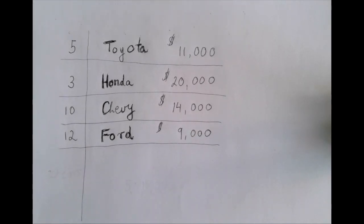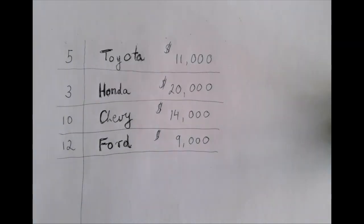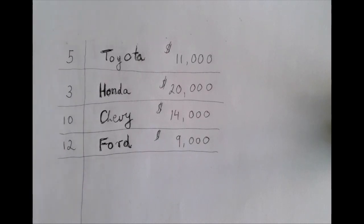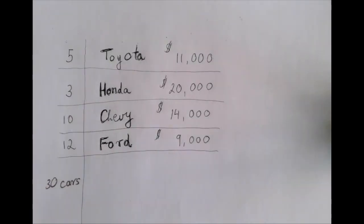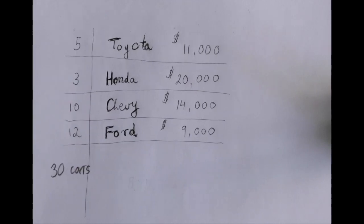The question is the same — what is the average value of these cars? We have a lot of cars. How many? We have 30 cars total. So we're going to have to add up 30 numbers and then divide by 30. It's a regular average; it's just that some numbers are identical.